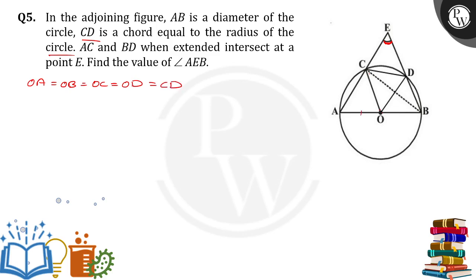Since OA is radius, OB is radius, OC is radius, OD is radius, and CD is also equal to the radius. Then triangle COD is equilateral. Therefore, angle COD is equal to 60 degrees.